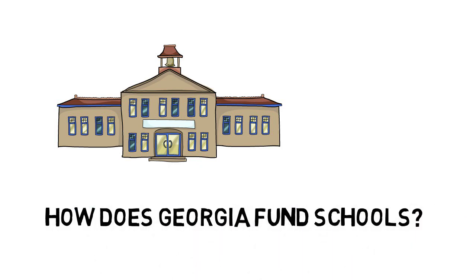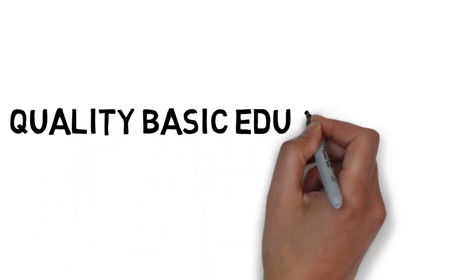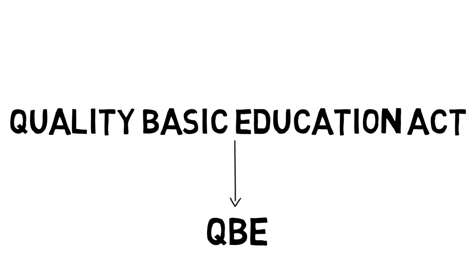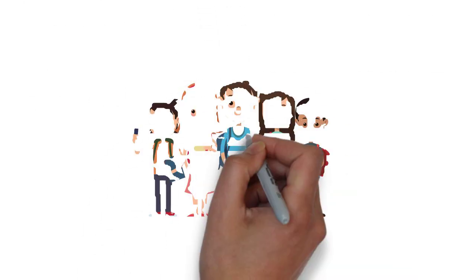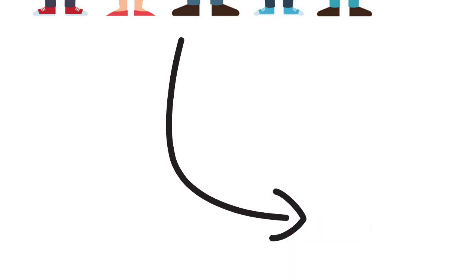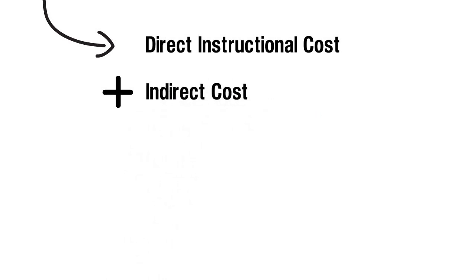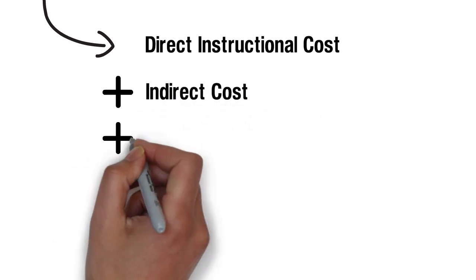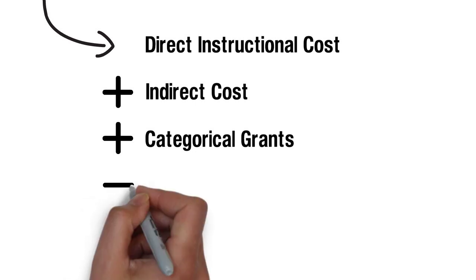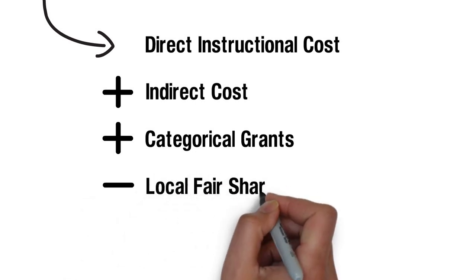Georgia's public schools are funded through a law passed in 1985 called the Quality Basic Education Act, or QBE. At its most basic, QBE takes the total number of students and uses that number to decide how much to pay out for school employee salaries — known as direct instructional cost and indirect cost — and other expenses needed to run a school, known as categorical grants. Before sending that amount down to each district, QBE subtracts out what the state thinks each district should be paying on its own, called local fair share.